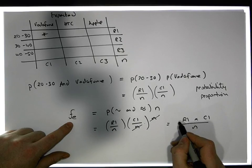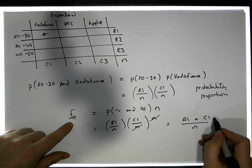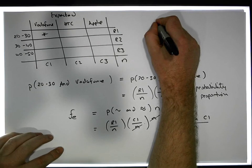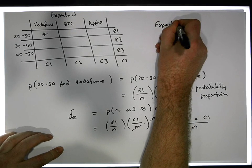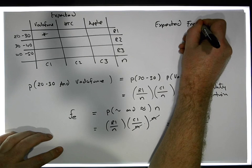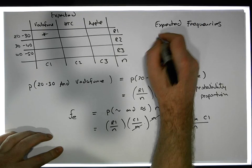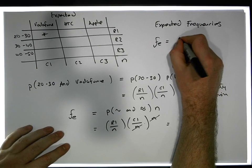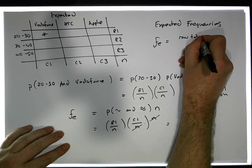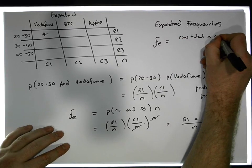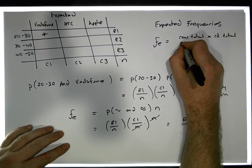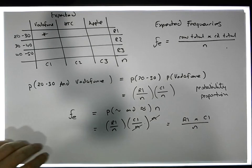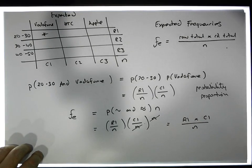To calculate an expected frequency, all we need is the row total and the column total relative to the total number of observations. Our expected frequency formula is: F_e = (row total × column total) / n, where n is our sample size.